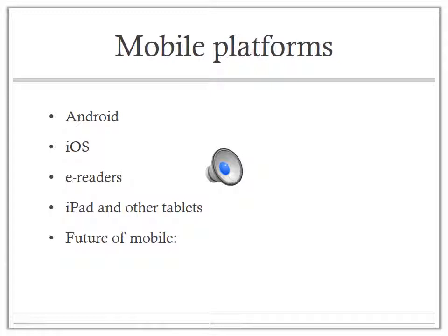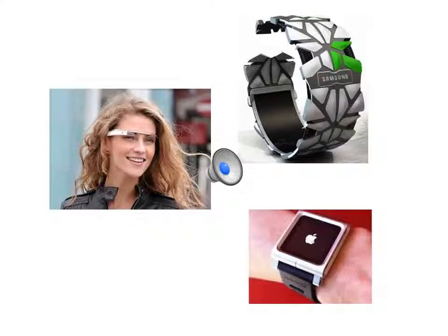The most common mobile platforms are Android, iOS, e-readers like the Nook, iPads and other tablets, and apps. What we can expect to see in the future are wearables like Apple's recently launched iWatch and Samsung's smartwatch, which they call the Gear, and of course Google Glass. I highly encourage you to watch the Daily Show segments on Google Glass, which I posted on Beachboard.